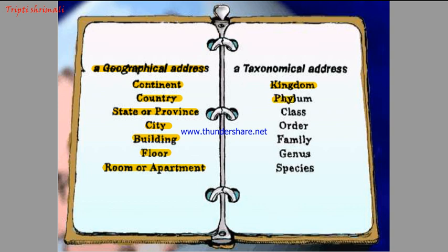If we know the kingdom, then we come to know to which phylum the organism belongs. Then class, order, family, genus, and finally the species. So this makes the taxonomical address of the organism.